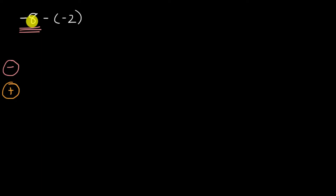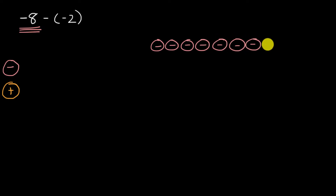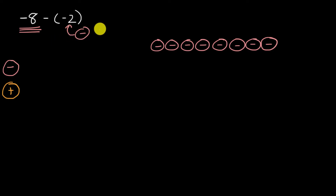Negative eight can be represented as eight negative number chips — one, two, three, four, five, six, seven, and eight. Now, if we're subtracting a negative number — this negative two — you could view this as two negative number chips, but we're going to be taking those away because we have a subtraction. So if we start with negative eight and we want to subtract negative two, we can just take away two of these negative number chips.